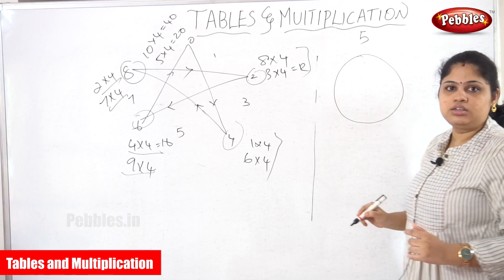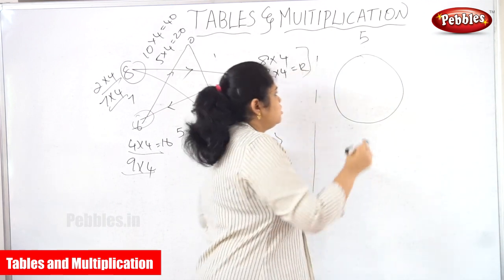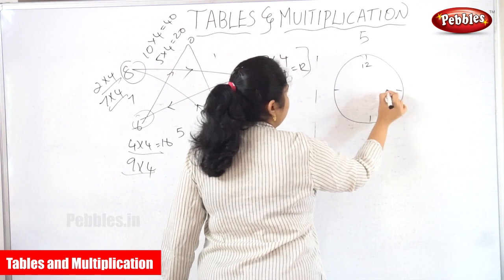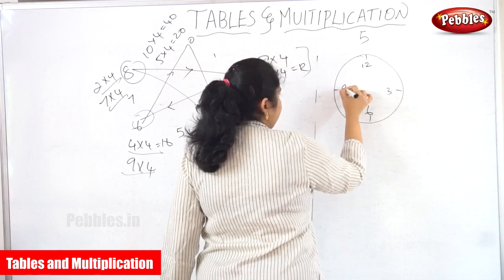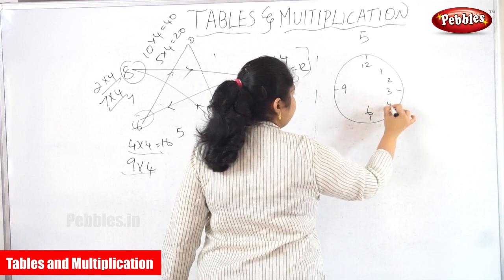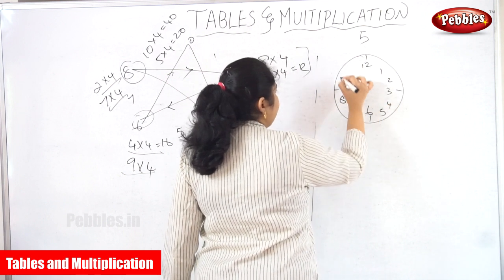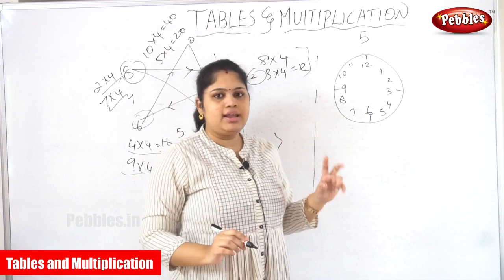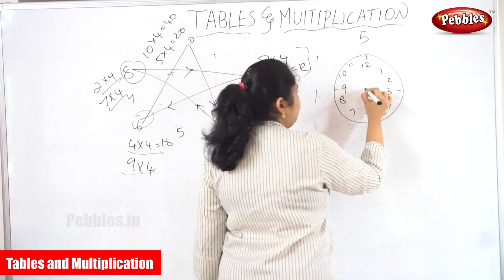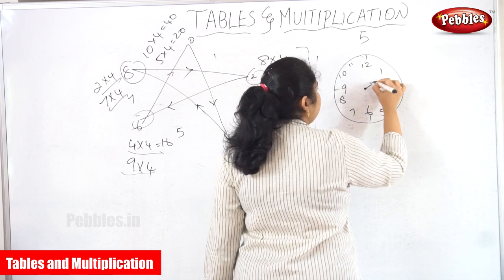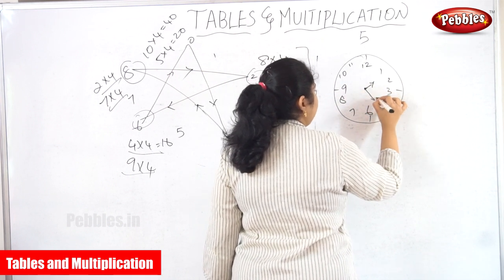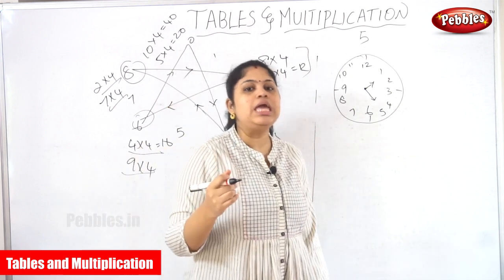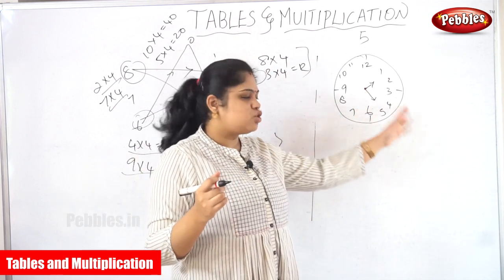How does the clock work? You see — 12, 3, 6, and 9, 2, 4, 5, 7, 8, 10, 11. There is a small hand and a big hand. The small hand will denote the hours, and the big hand will denote the minutes.